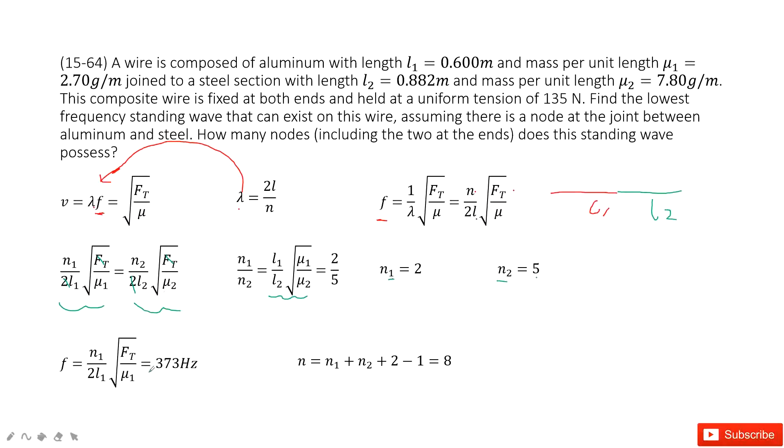Now we can find the lowest frequency in this function. So lowest is n1, L1, Ft, mu1. See, n1 is just 2, L1 is just given. Ft is given, mu1 is given. So you can get the value for the frequency, the lowest frequency, F.